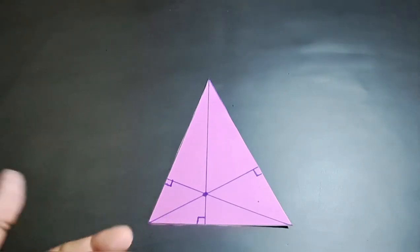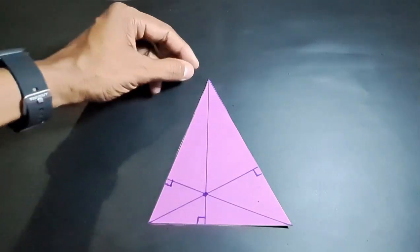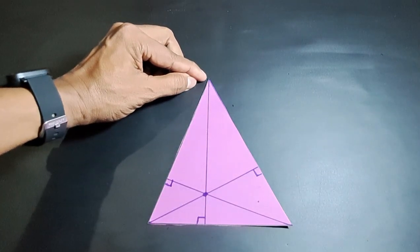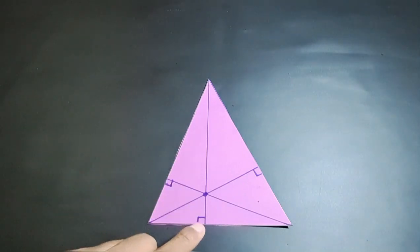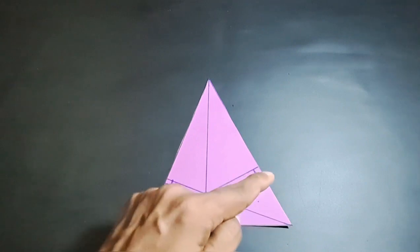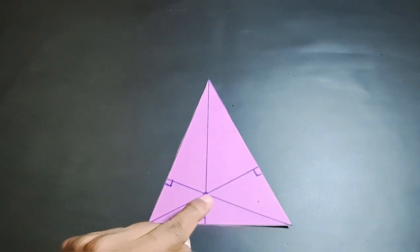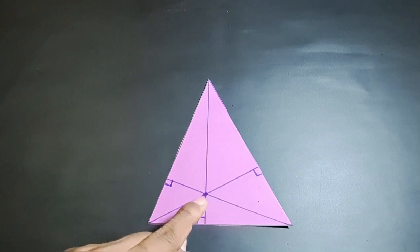So what is an altitude? An altitude is a line drawn from a vertex of a triangle so that it forms an angle of 90 degrees with the opposite side. There are three altitudes in a triangle and all the three altitudes are concurrent. That means they pass through the same point as we have verified through this activity.